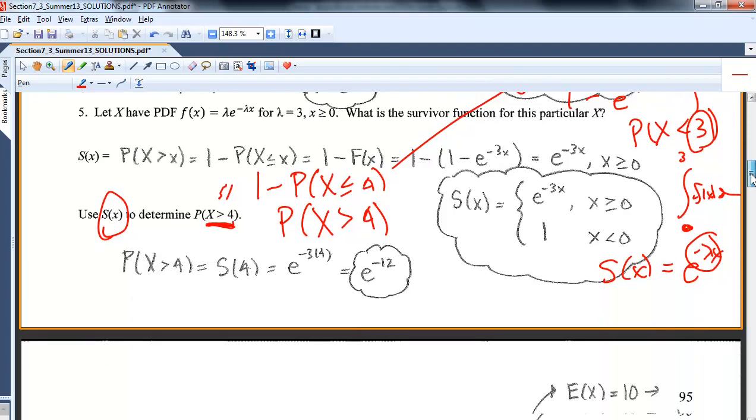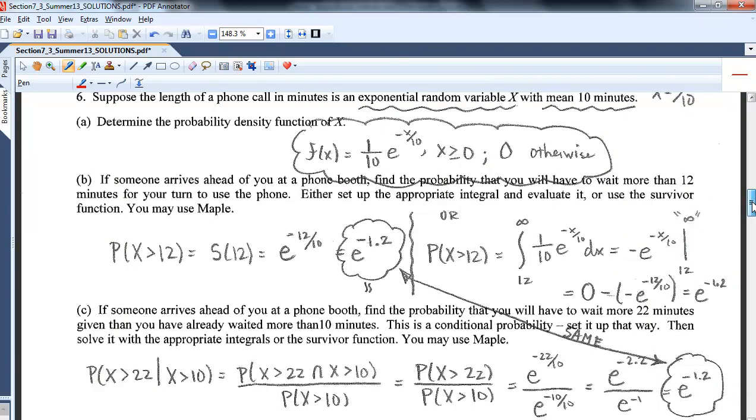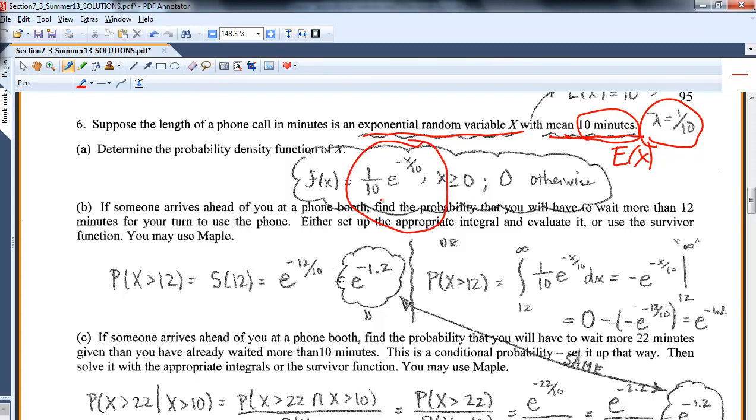Let's go to the next page. I'm doing an example here. Length of phone calls is another nice one for an exponential. Length of phone calls can be described by an exponential with a mean of 10 minutes. Remember, the mean is the reciprocal of the parameter. So if your expected value is 10 minutes, then your parameter must be 1 over 10. You can see I built my probability density function as lambda e to the negative lambda x for x positive. This guy integrates to 1. He's legal.